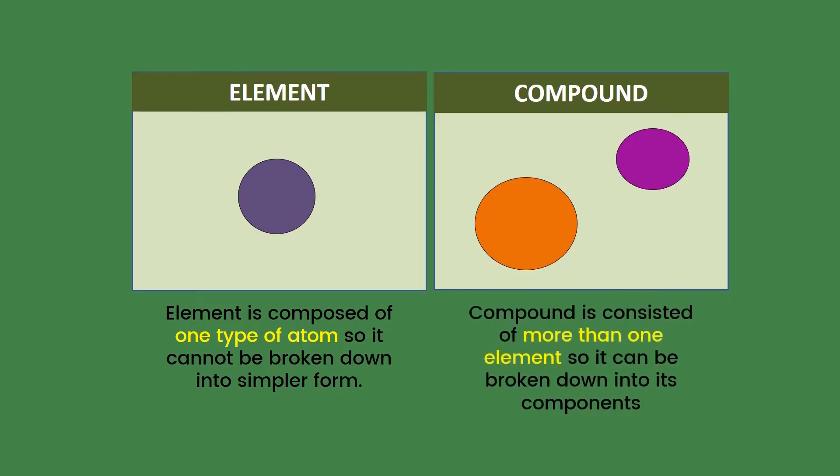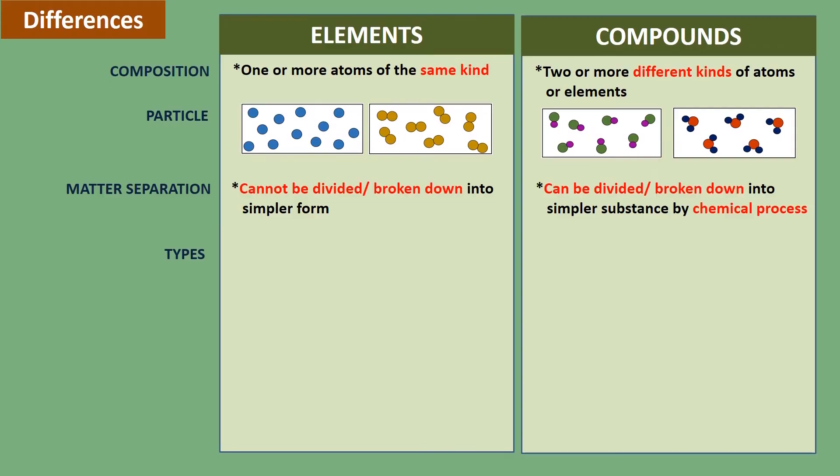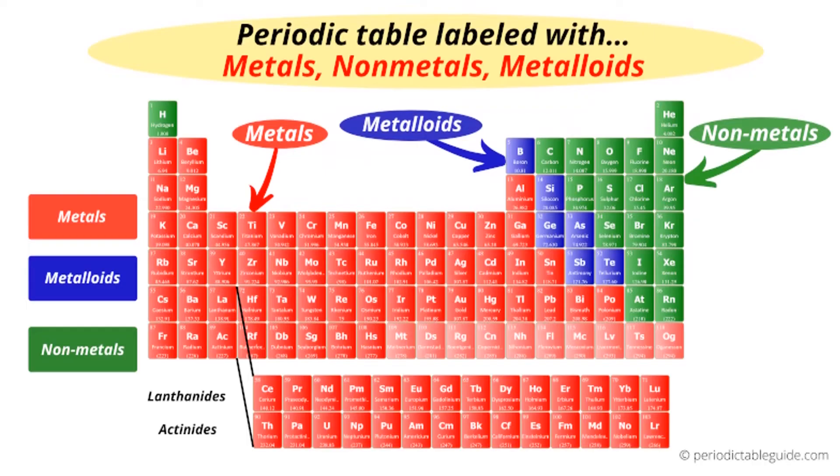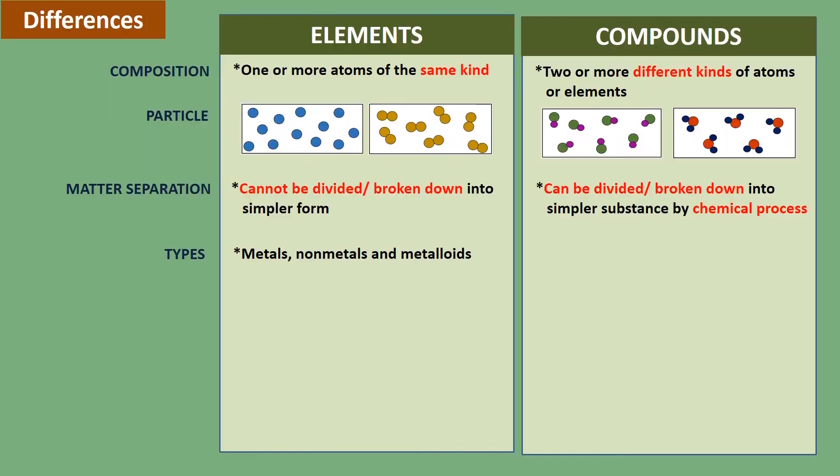The types of elements are metals, non-metals, and metalloids. In the periodic table of elements, the elements in red color are metals, in green color are non-metals, and in blue color are metalloids.